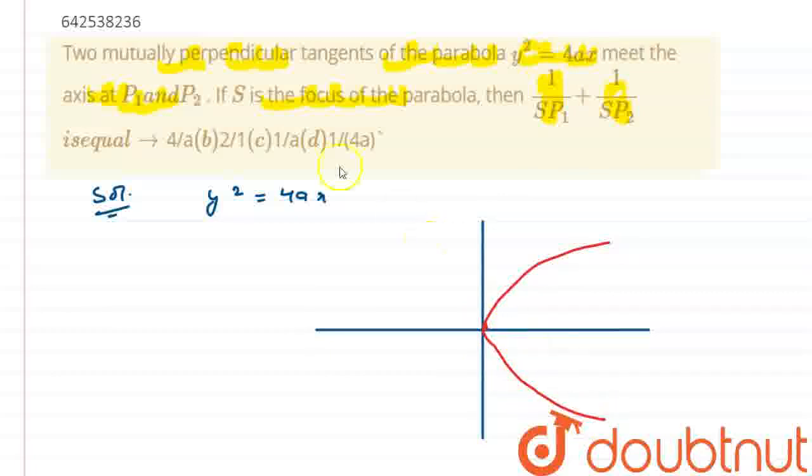Now, we have the tangents, they are mutually perpendicular. So, if we want the mutually perpendicular tangents, they must be drawn at the directrix. So, the tangents can be like this or drawn from any point. Okay, these are the two directrix.